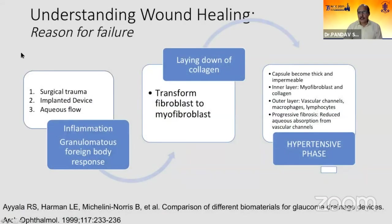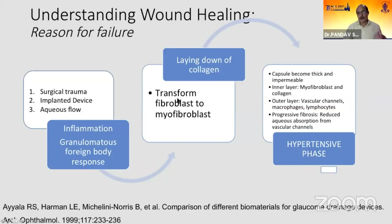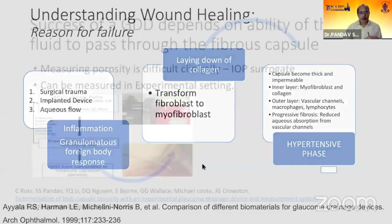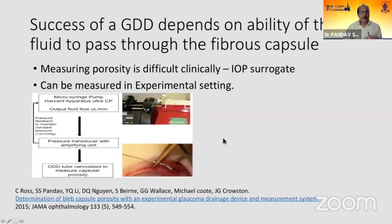Dr. Poorby has already alluded to the hypotensive phase. There are three things happening: surgical trauma, the device causing a foreign body reaction even if inert, and the presence of aqueous — which also modulates the wound healing response. There are a lot of fibroblasts which proliferate and convert into myofibroblasts, laying down collagen and forming a capsule that can become a thick fibrous capsule.